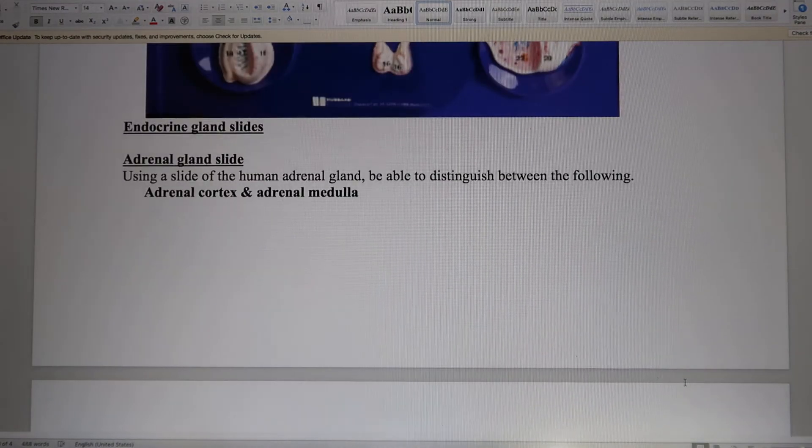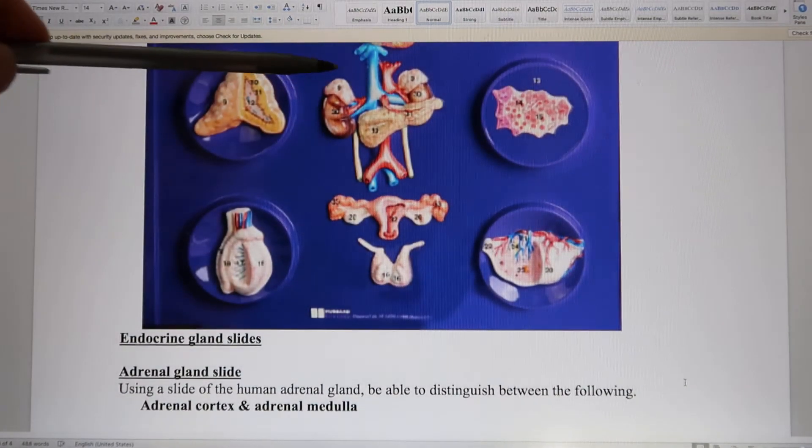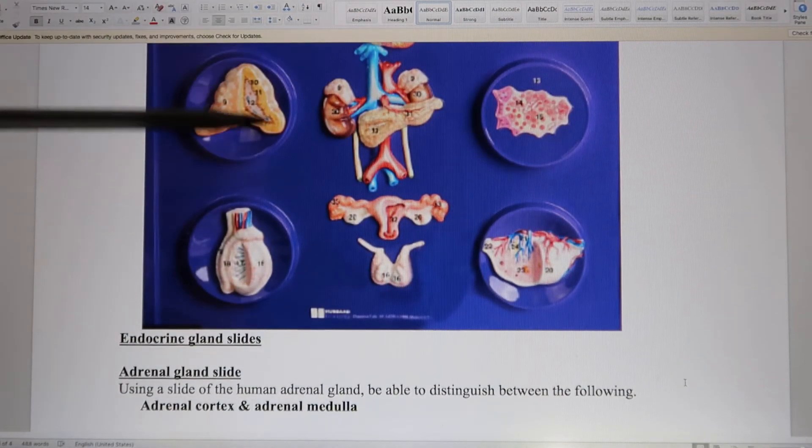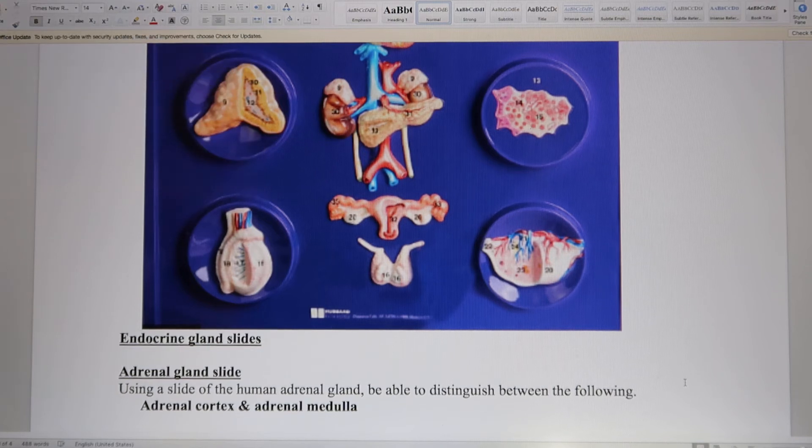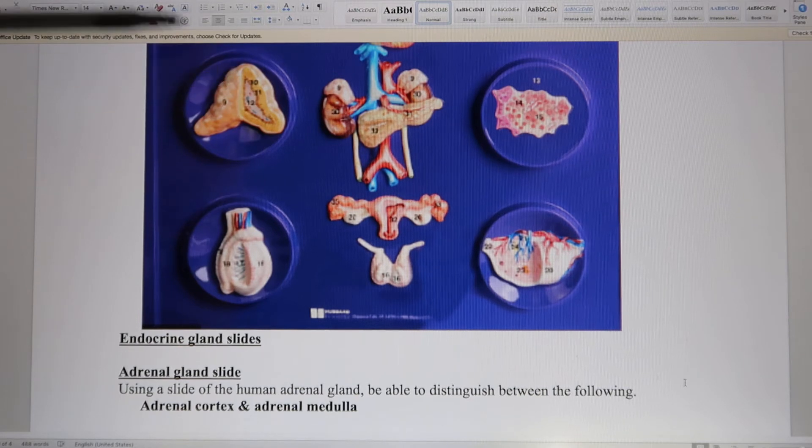And let's look at two slides. The first one is adrenal gland. So adrenal gland looks like this. This adrenal gland. And when we slice it outside, inside, they're different. So the outside called the adrenal cortex. Inside called the adrenal medulla.